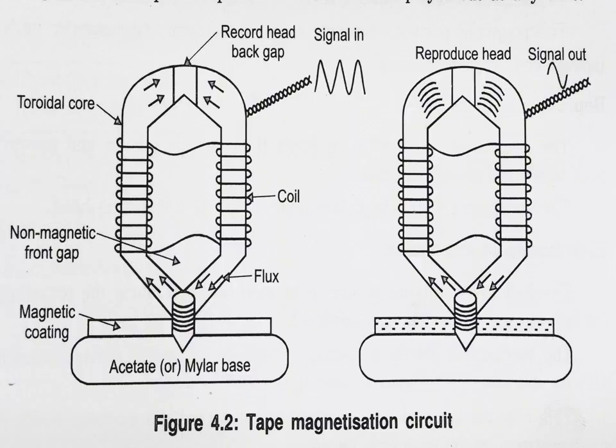The figure shows the tape magnetization circuit. It shows two types of head — the record head on the left side and the reproducible head on the right side. With respect to the record head, the signal enters the toroidal core and coil structure. This coil converts the electrical signal into magnetic flux lines. These flux lines are varying in nature, and whenever the flux lines change, an EMF will be induced.